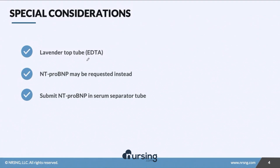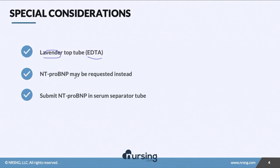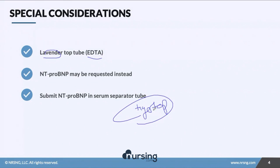When we run this lab value, we're using our lavender top tube, which is the EDTA tube. You might also see an NT pro BNP requested to help further diagnose — that one is given in the serum separator tube, which is the tiger top. Most importantly, keep in mind this test is generally run in a lavender top tube.